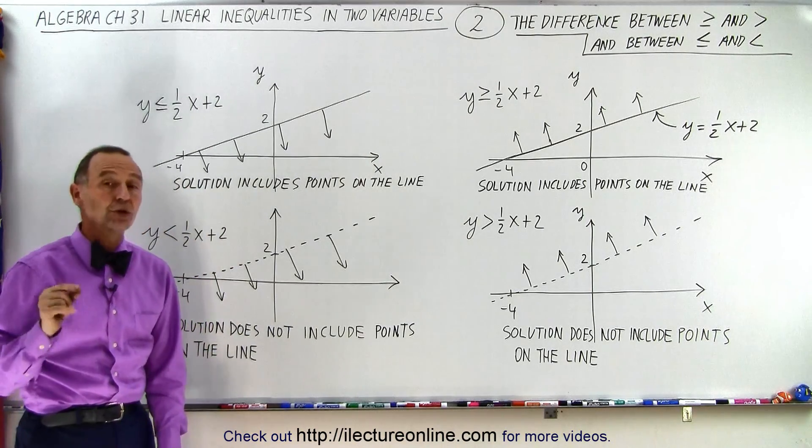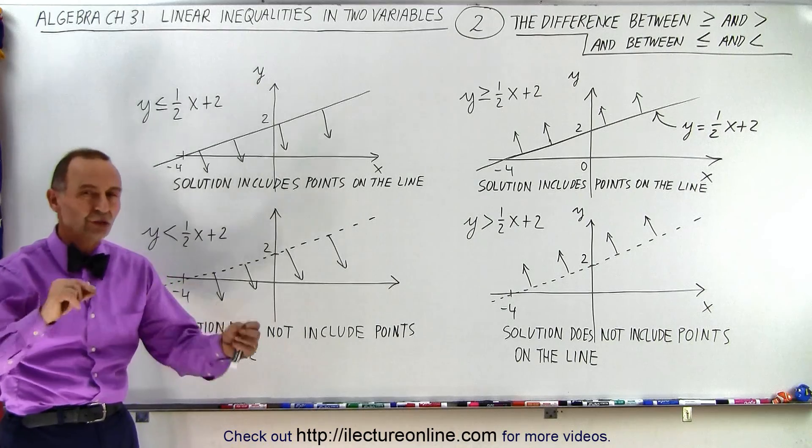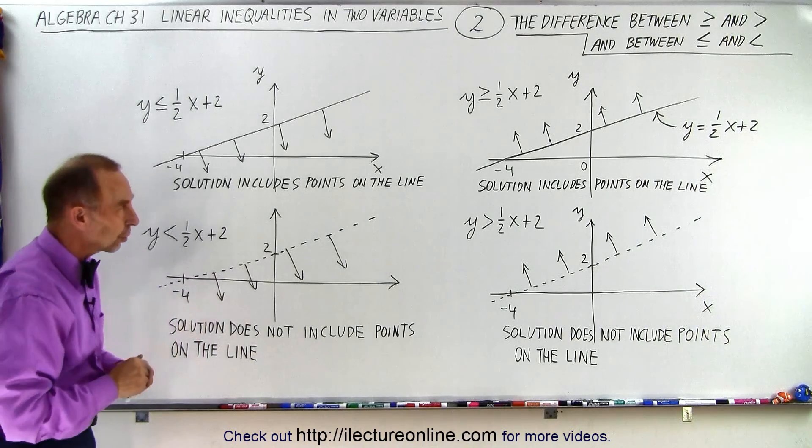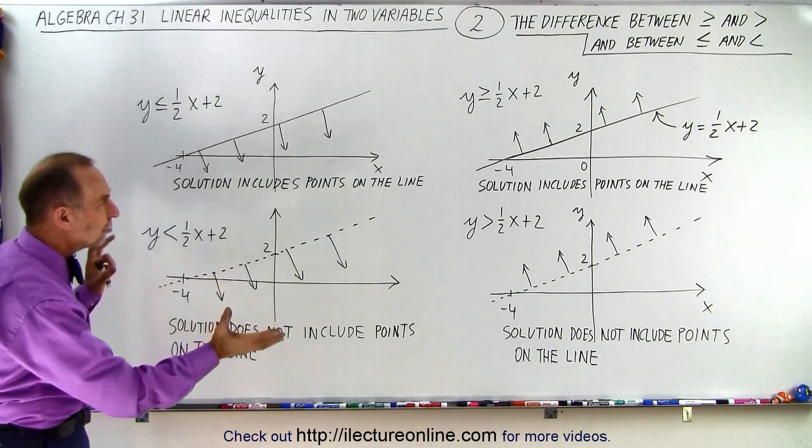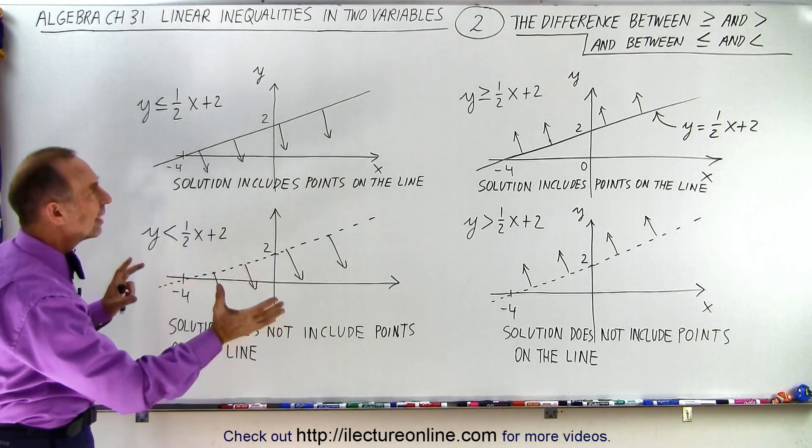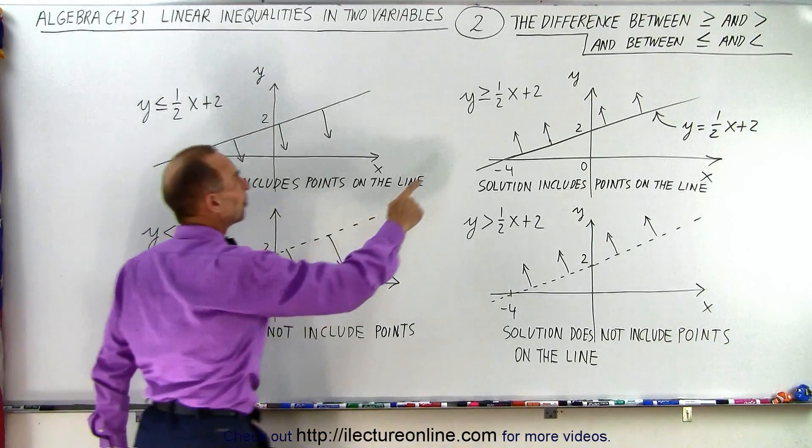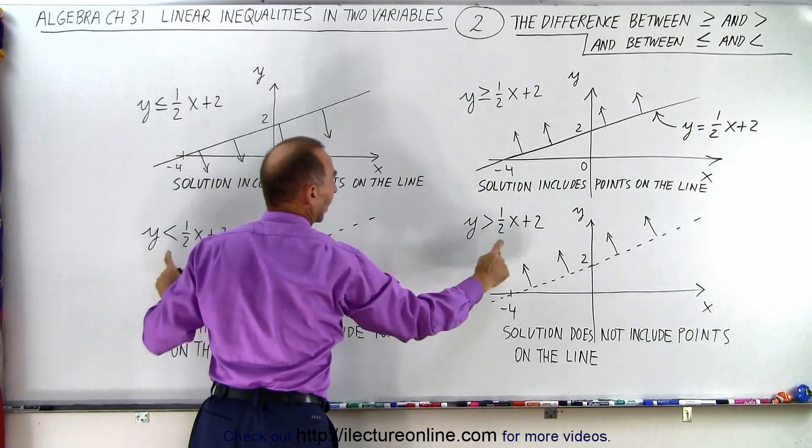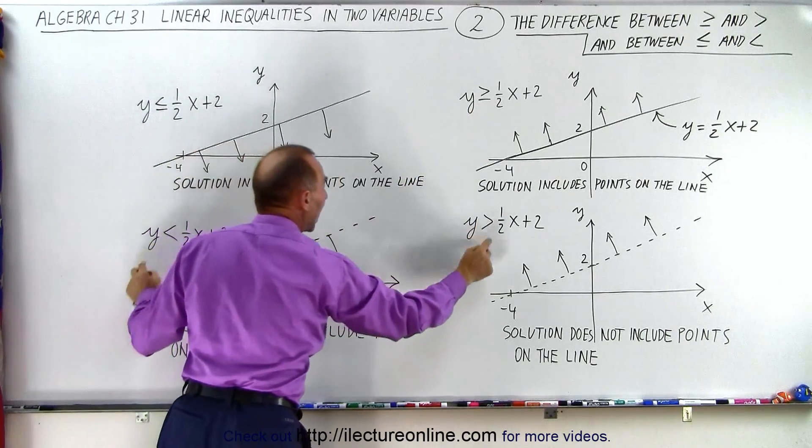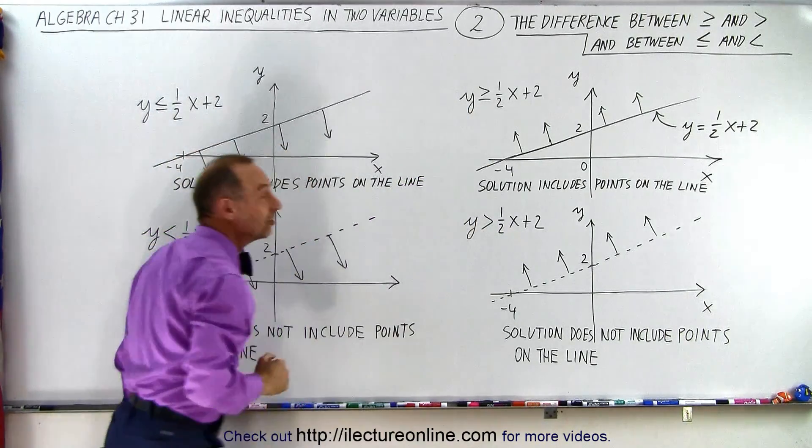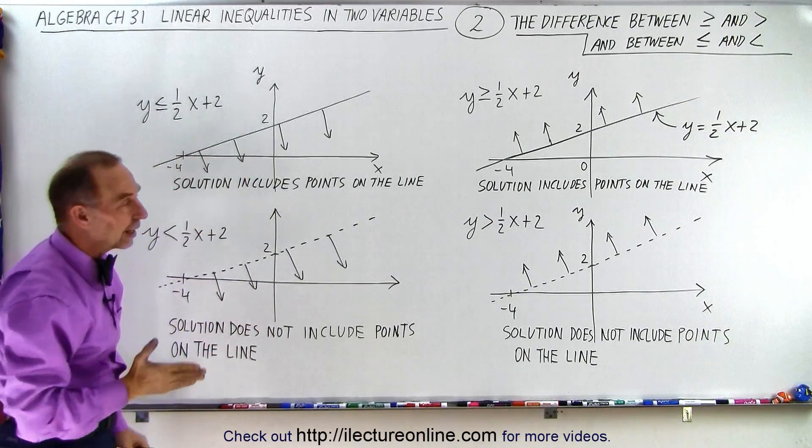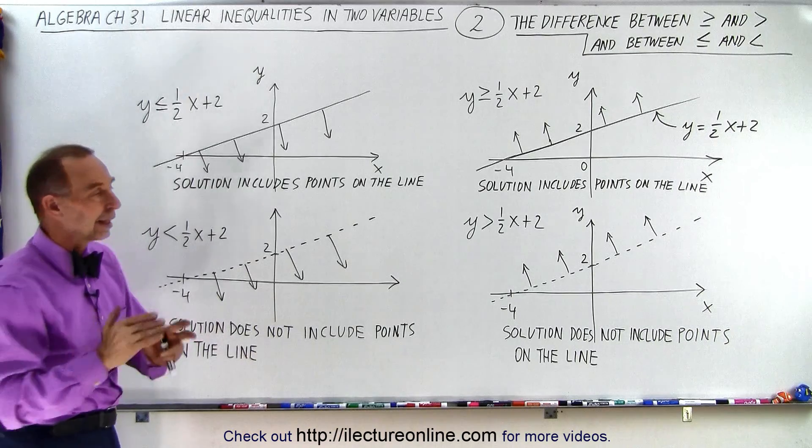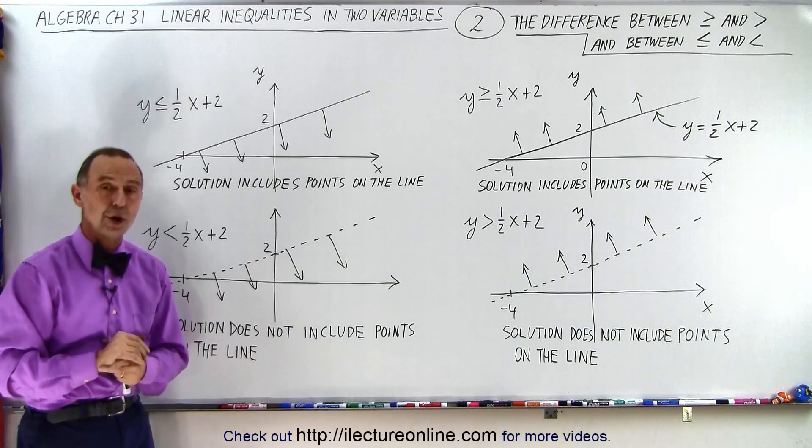In the next video, we'll show you how to determine which region satisfies the inequality and which region doesn't. But at least here you can see the difference and what it means when we have greater than or less than with an equal sign versus without. It simply means it either includes the points on the line that divides the two regions or it doesn't include those points. And that is how we know.